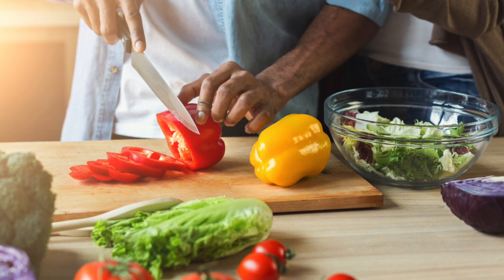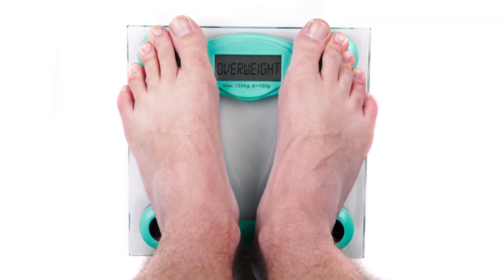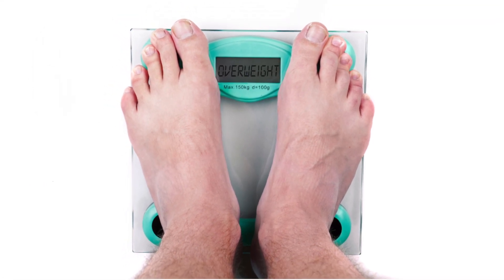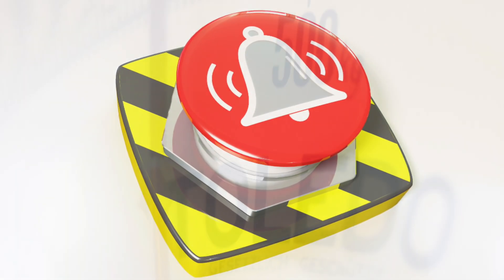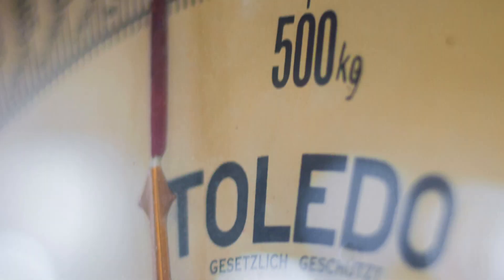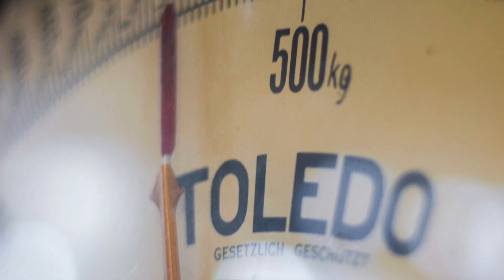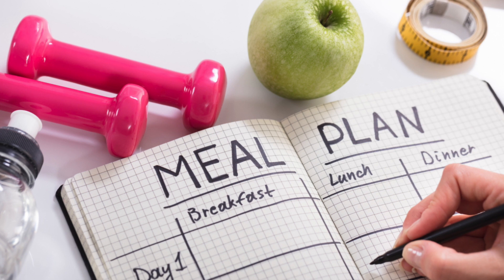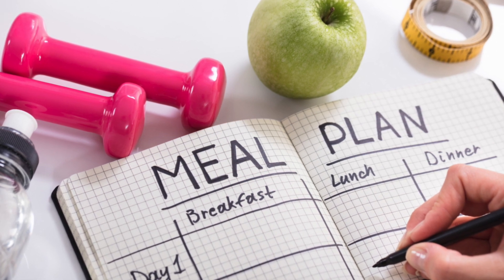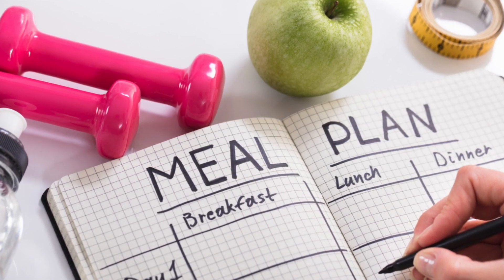If your BMI is between 25 and 29.9, you are in the overweight category — it's an alert point, and it is better to start moving towards a healthier weight. If your BMI is 30 or over, you are in the obese category, which means you should see your dietitian to work on a plan for losing weight as soon as possible.